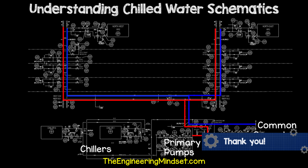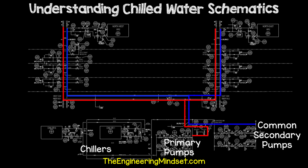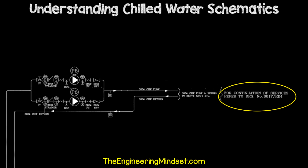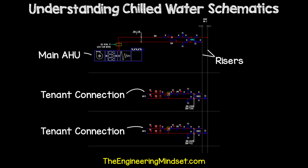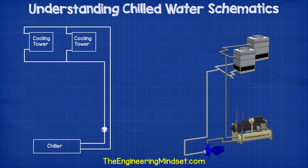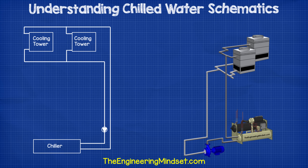Usually they will not display every air handling unit and fan coil unit that's connected to the system. Sometimes they will show the connection to the main AHUs, and other times they will refer you to a separate drawing if you want to see this detail. If the building rents floors out to tenants and the tenants have full control over the fit-out of that area, then the drawing will just show the connection from the main risers over to the tenant's space, and anything after that is up to the tenant's fit-out contractors, who should provide the landlord with a copy of their own drawings. Additionally, you should remember that these drawings do not show every bend or the exact route through the building — they are simply a flat 2D representation of the system.